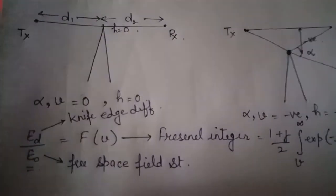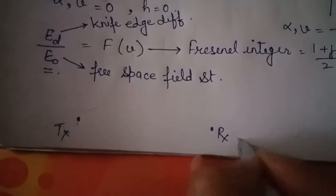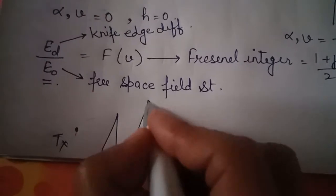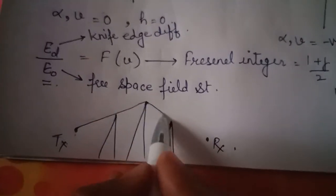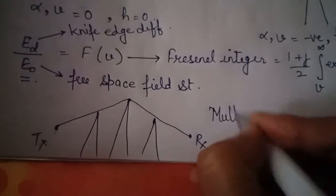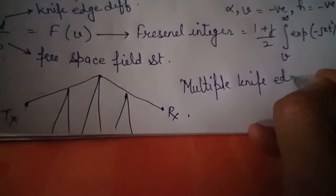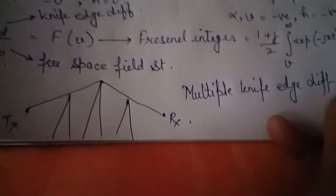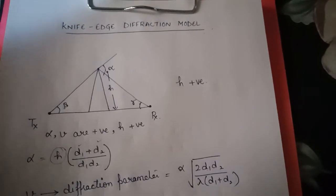The knife-edge model assumes only one obstacle. If we have multiple obstacles — a first, second, and third obstacle between transmitter and receiver — the signal travels across all of them. This is called multiple knife-edge diffraction. That covers the model of knife-edge diffraction. I hope you all understand the concept of diffraction. Thank you so much.